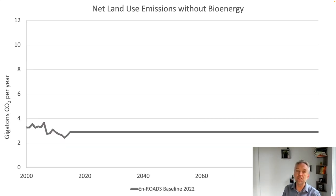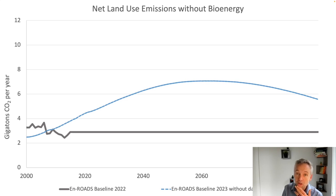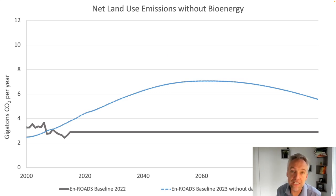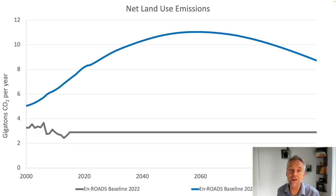Big changes with net land use emissions, or LULUCF. In the old version we just assumed that those emissions would stay flat, around three gigatonnes CO2 per year. Now, with more deforestation, more drops in overall sequestration into forests due to forest degradation, and overall improved modeling, we have much higher net land use emissions without bioenergy. And if we add in bioenergy — due to burning trees, rotting, and soil respiration — it's even higher. So, higher land use emissions, and you'll notice more potential for mitigation by cutting these emissions.